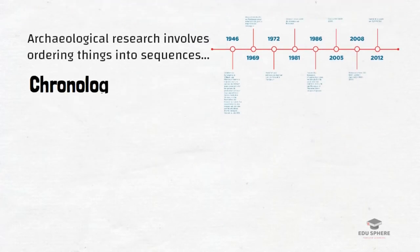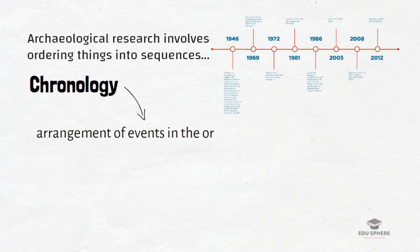Chronology is simply a science of measuring time and ordering of things in time. In other words, it is the arrangement of events in the order of their occurrence in time.